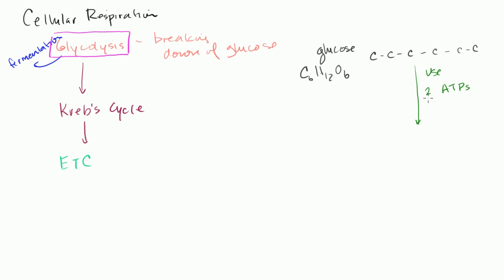But I use two ATPs, and then I'm going to essentially break up the glucose into two, three carbon compounds that actually also have a phosphate group on them. The phosphate groups are coming from those ATPs. They also have a phosphate group on them.